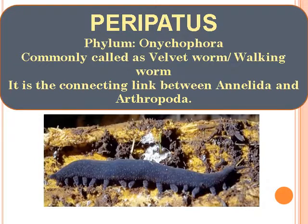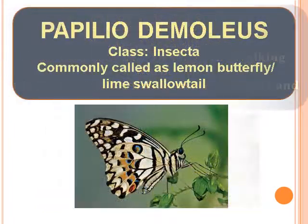Peripatus — Phylum Onychophora, commonly called as Velvet Worm or Walking Worm. It is the connecting link between Annelida and Arthropoda. Papilio Demoleus — Class Insecta, commonly called as Lemon Butterfly or Lime Swallowtail.